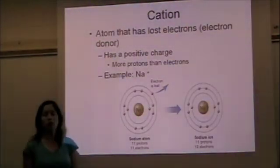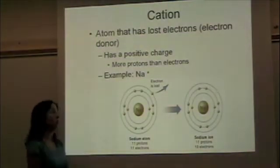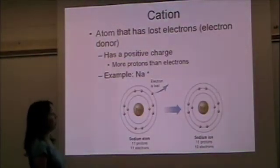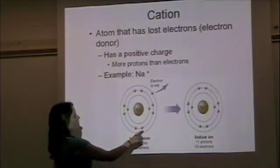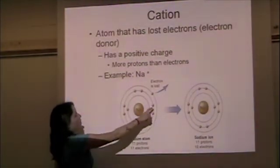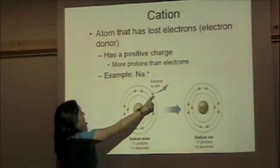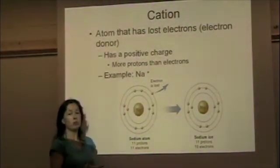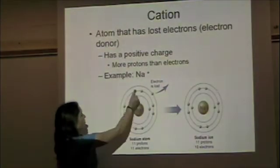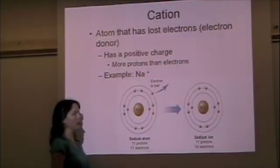If an atom loses an electron, it becomes an ion which is a positively charged ion. Sodium has 11 protons and 11 electrons, but it's not very stable because it has this one electron in the outer shell. It would rather lose that electron and just have the full second shell because that's going to make it more stable.